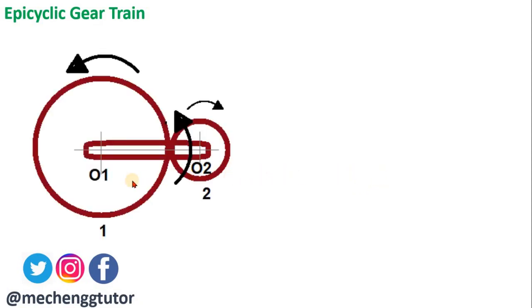In the epicyclic gear train, the axis of the gear wheels rotates about the axis of other wheels in addition to revolving about their own axis. For example, with two gears connected by an arm between their centers: if O2 is fixed, gear 1 will revolve around gear 2. If center O1 is fixed, gear 2 revolves around gear 1. If the arm is fixed, both gears rotate about their own axes and it becomes a simple gear train.